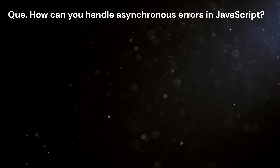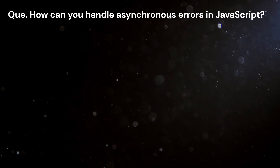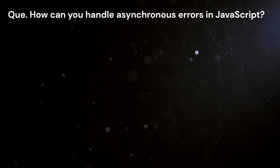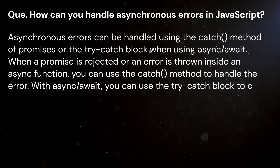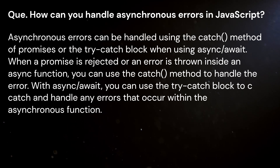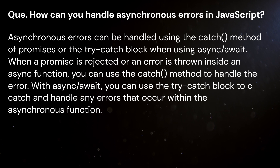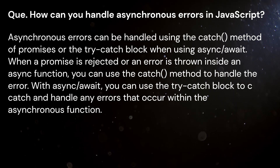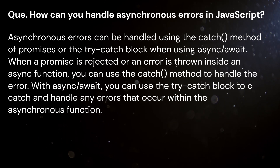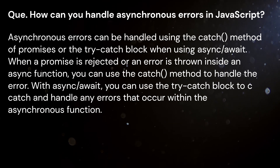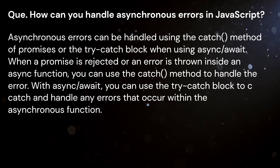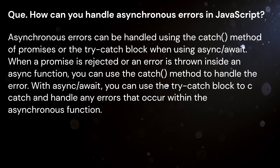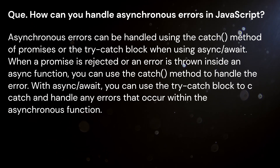Question: How can you handle asynchronous errors in JavaScript? Answer: Asynchronous errors can be handled using the catch method of promises or the try-catch block when using async/await. When a promise is rejected or an error is thrown inside an async function, you can use the catch method to handle the error. With async/await, you can use the try-catch block to catch and handle any errors that occur within the asynchronous function.